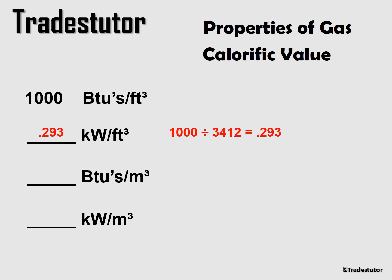The third way is BTUs per cubic meter. Starting from BTUs per cubic foot, the BTUs stay the same but the volume changes — we're increasing it. You have to think about this visually: a cubic meter is 35.31 times bigger than a cubic foot. So we take the 1000 BTUs per cubic foot and multiply by 35.31, giving us 35,310 BTUs per cubic meter.